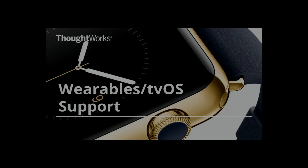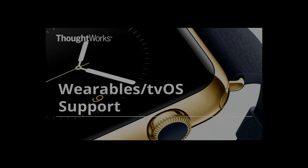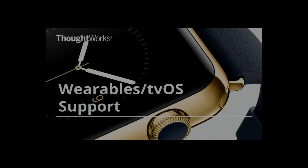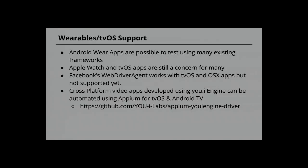We started with mobile, then moved to wearables — getting notifications on TV while watching a soccer game. Next are advanced platforms like HoloLens, Google Glass, Samsung Tizen. Android wearable apps are relatively easy to test using existing libraries, but Apple Watch and tvOS are still a concern — Apple didn't release any frameworks or libraries to automate their wearable apps.